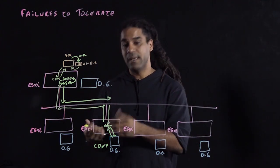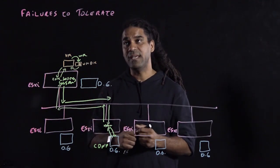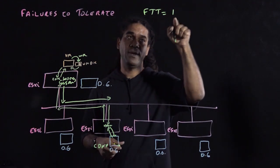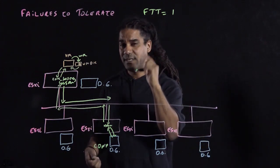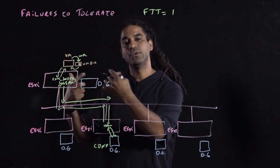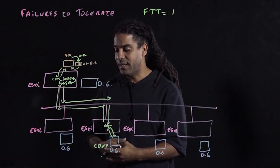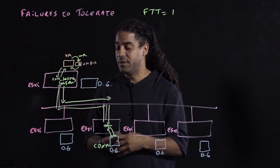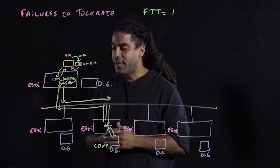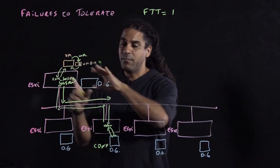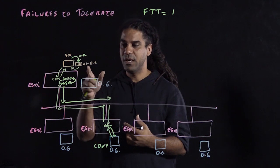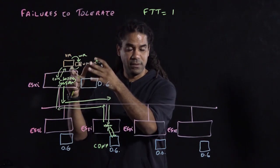So we're going to do an example of how we handle FTT equals to one, which means failure to tolerate equal to one. So if one physical component dies, the VM will still have access to that component, or the objects that the components constitute. In a case of FTT equals to one, when you enable that SPVM for a particular object, vSAN will automatically create multiple components of that VMDK, or that object.